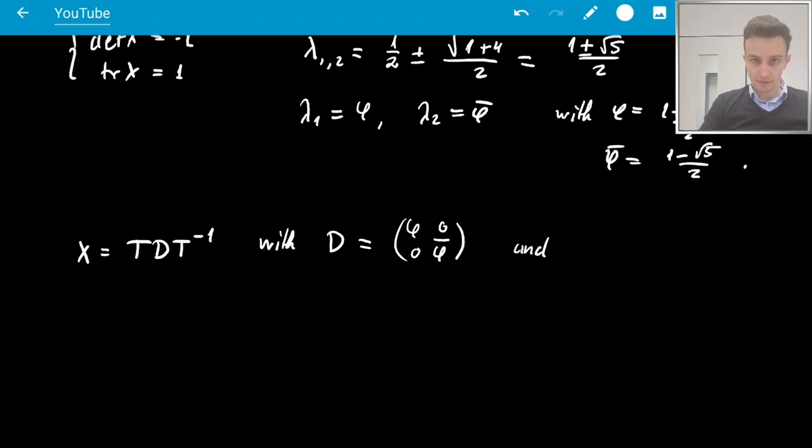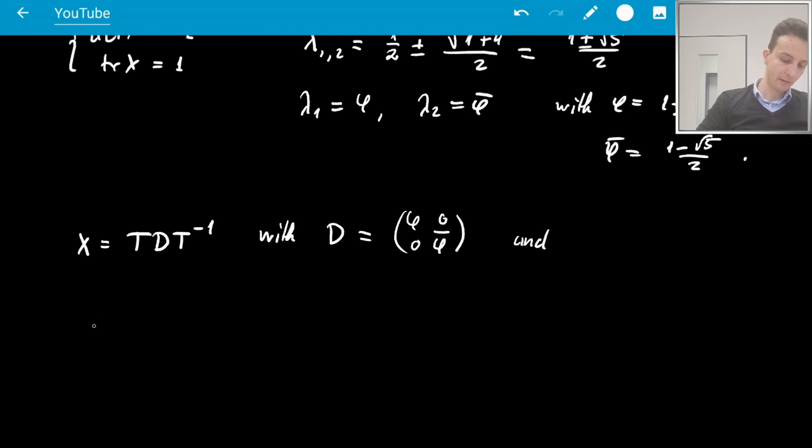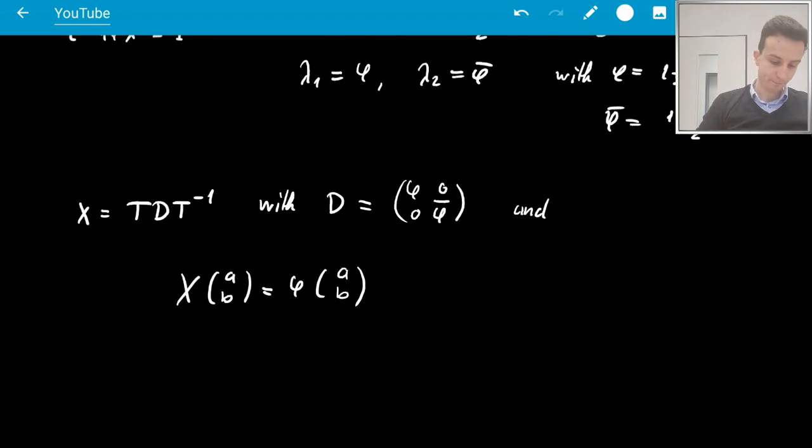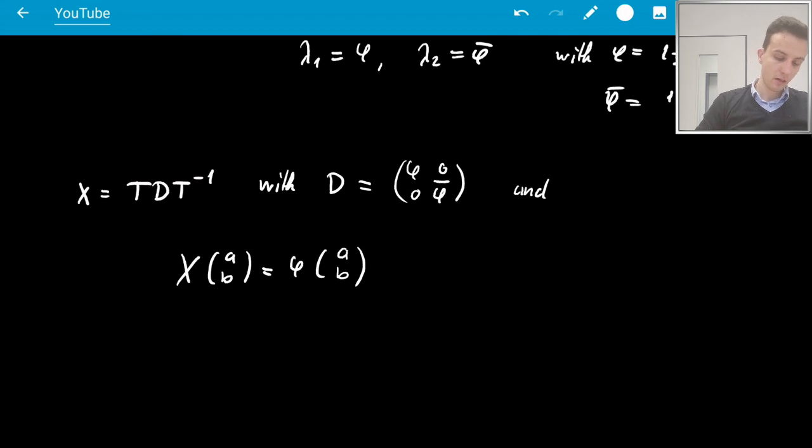And so let's find T, let's eat our vegetables right away even though normally you might leave this for later. So we want x times the vector ab to be phi times ab, that'll be the first entry, the first column of T. So okay, let's do this. What do we get? We get the matrix 0, 1, 1, 1 times ab, that's equal to b, a plus b, and this should be equal to phi ab.